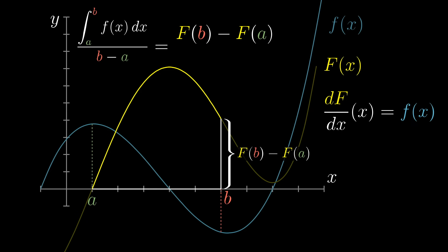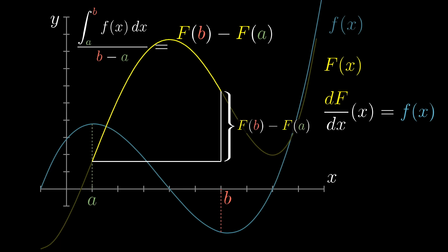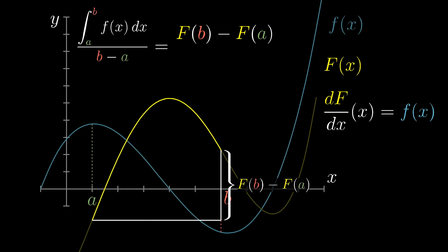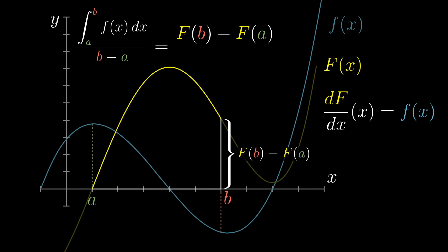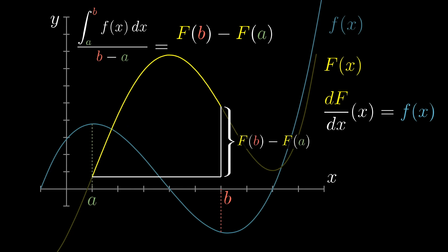I've conveniently chosen an antiderivative that passes through zero at the lower bound here, but keep in mind you can freely shift this up and down, adding whatever constant you want to it, and it would still be a valid antiderivative.